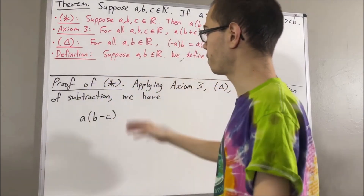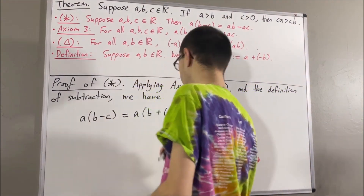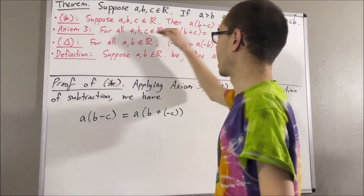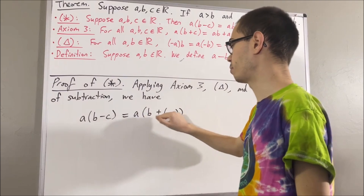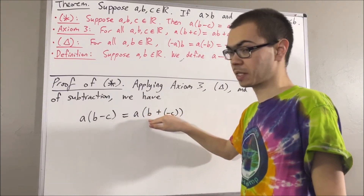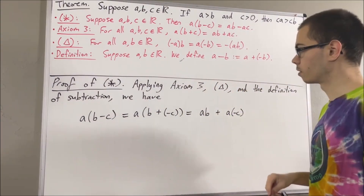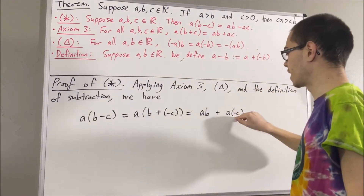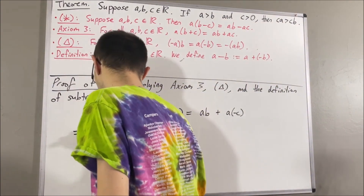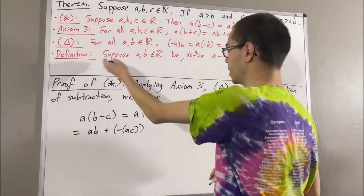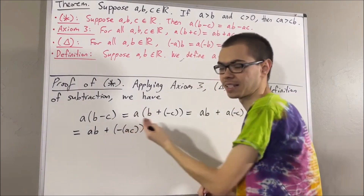First of all, by definition of subtraction, B minus C is equal to B plus the negative of C. Then, applying axiom 3, we can distribute A across this parenthesis. So we have that A times B plus the negative of C is equal to A times B plus A times the negative of C. But then, A times the negative of C is equal to the negative of A times C. But then, applying the definition of subtraction again, AB plus the negative of AC is equal to AB minus AC.